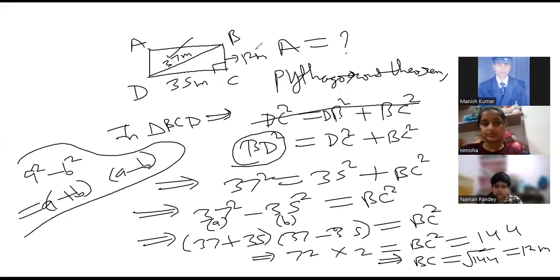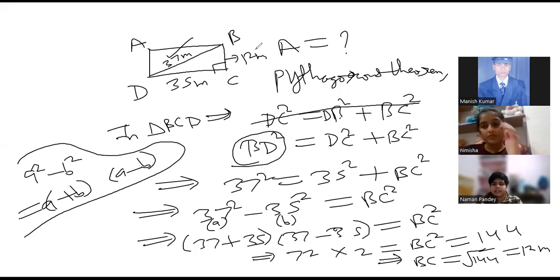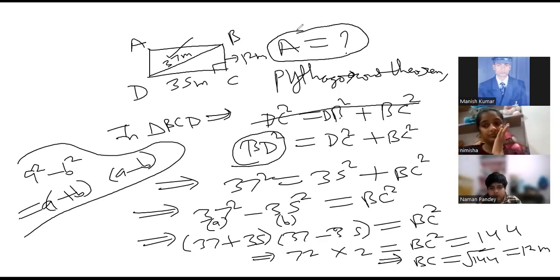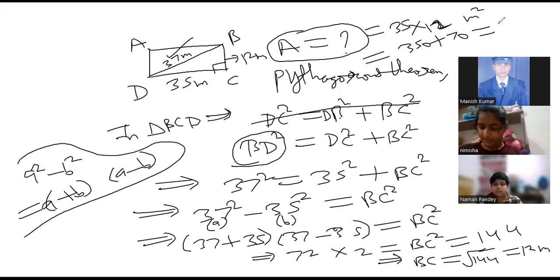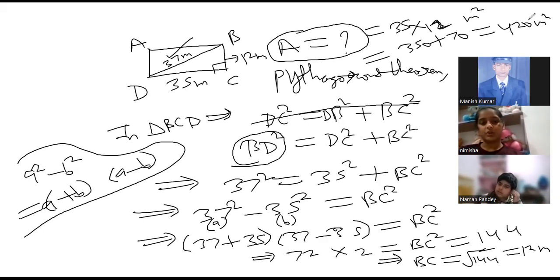This is of the form a squared minus b squared — a squared minus b squared equals a plus b into a minus b. Are you aware of this formula? No sir. So if we take a as 37 and b as 35, then a plus b into a minus b equals BC square. 37 plus 35 is 72 and 37 minus 35 is 2. 72 into 2 is equal to 144 and square root of 144 is 12 meters. This is your BC — 12 meters.